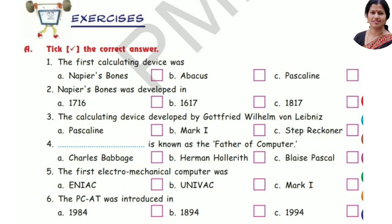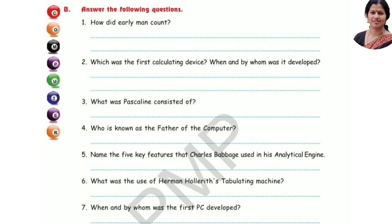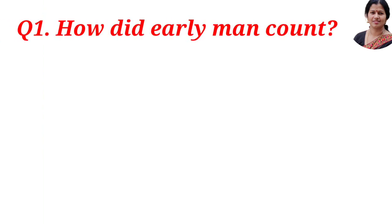Number three: the calculating device developed by Gottfried William von Leibniz is option C, Step Reckoner. Number four: Charles Babbage is known as the father of the computer, option A. Number five: the first electromechanical computer was option C, Mark One. Number six: the PC was introduced in option A, 1984.